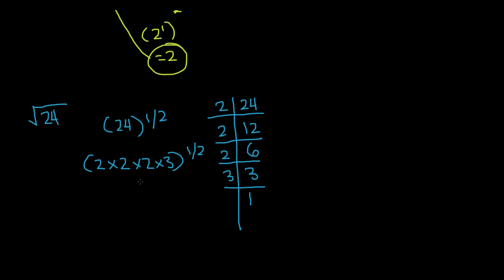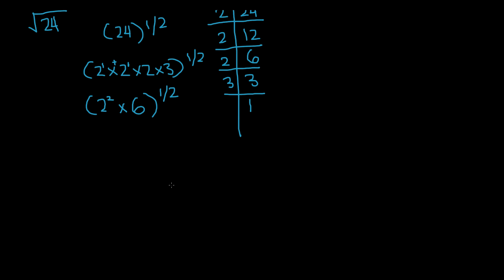This is very long, so what we can do is pair the same numbers. So 2 times 2 we can write as 2 to the power of 2 — remember, each is to the power of 1, and since the base is the same we add the powers. So 2 to the power of 2. Now the third 2 doesn't have another 2 to pair with, so we can simply multiply 2 and 3 to get 6, because we're just trying to simplify. And then we write this as to the power of 1 half.